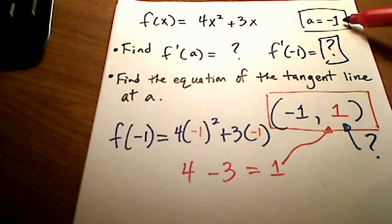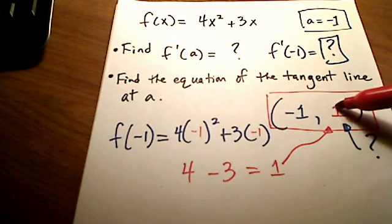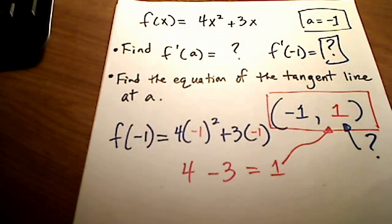So negative 1 squared is positive 1, and positive 1 times 4 is still just 4, and 3 times that negative 1 is just a negative 3, so I really have 4 minus 3, which is a 1. Hey, that is the y portion of my coordinate. So I now have the full coordinate. Not just the partial coordinate, not just the x, but also the x and the y. This is going to come in handy a little bit later on, especially when I need to find the equation of the tangent line.